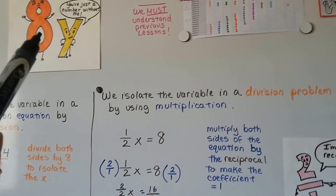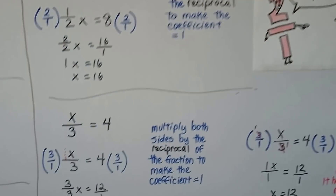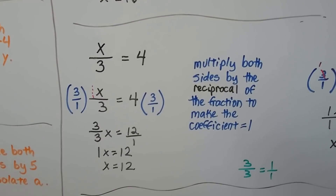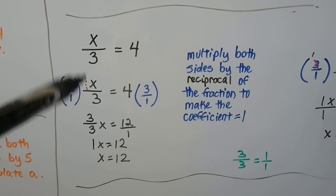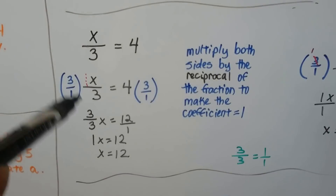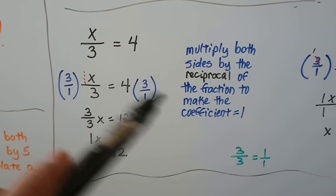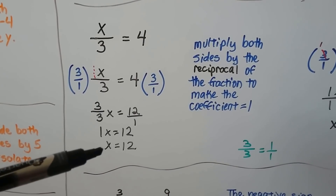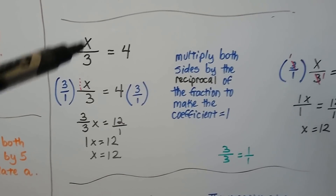The number in front of the variable is the coefficient — there can be a fraction coefficient. For x divided by 3 equals 4, we multiply both sides by the reciprocal to make the coefficient equal 1. There's an invisible 1 in front of that x, so we really have 1x over 3. We flip 1 over 3 to 3 over 1 and multiply each side. That gives us 3 over 3x, which is just x, and 4 times 3 is 12. So x equals 12 — and 12 divided by 3 is 4, which checks out.